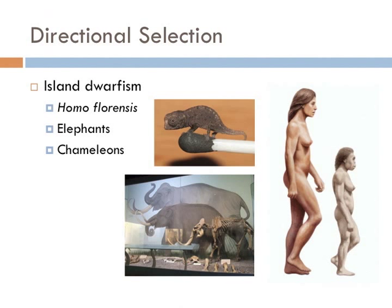Directional selection doesn't always select for bigger, faster, and stronger. Sometimes natural selection selects for smaller species, which is common on islands and is known as island dwarfism. Islands typically have very limited resources, and individuals that are smaller can survive on less food, making them more fit to survive and reproduce. We've seen this in elephants, chameleons, and even the human species. A fossil of a new species of humans was discovered on the island of Flores in the southern Pacific — these hominids exhibit classic island dwarfism and are a fraction of the total body mass of mainland humans. This is another example of directional selection.